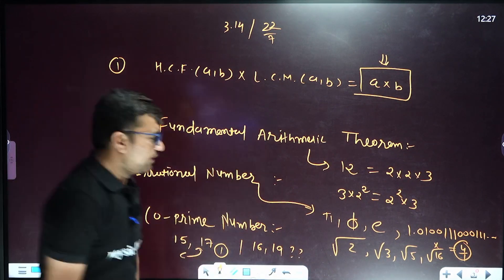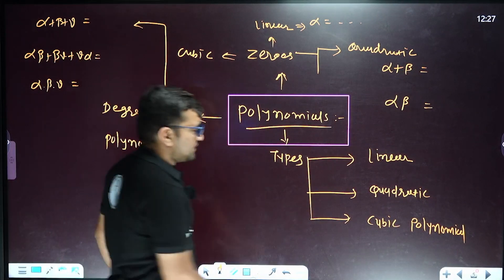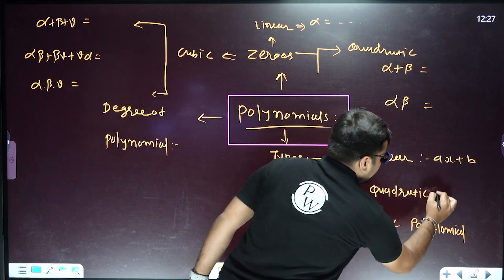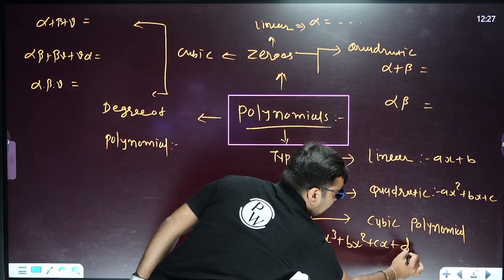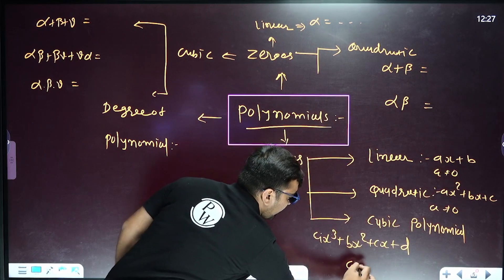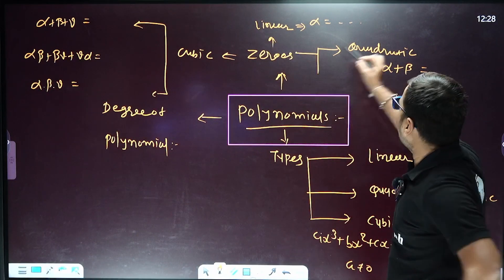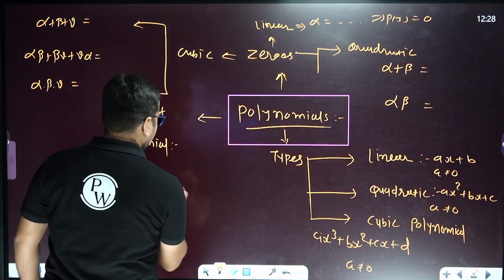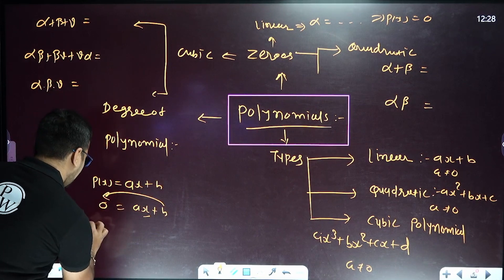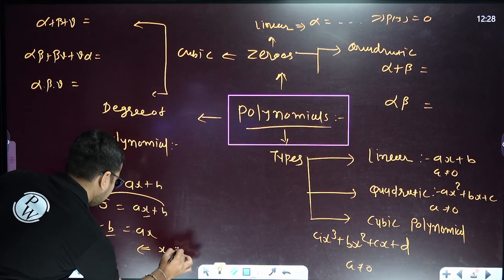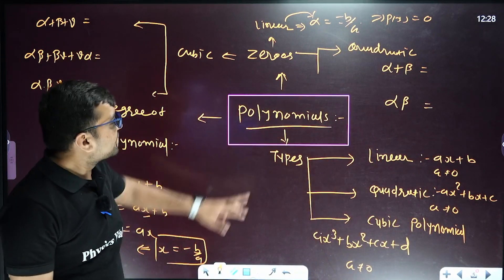Next chapter: polynomials. There are three types generally discussed. The general form of a linear polynomial is ax plus b. A quadratic polynomial is ax squared plus bx plus c. A cubic polynomial is ax cubed plus bx squared plus cx plus d, where a is not equal to 0. For a linear polynomial, to find the zero, set p(x) equal to 0, so ax plus b equals 0, giving x equals minus b upon a. This zero is also called alpha.